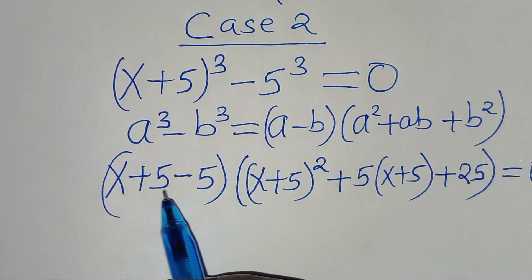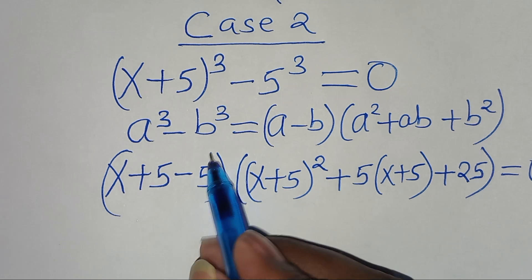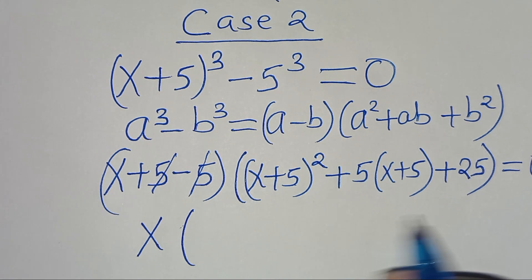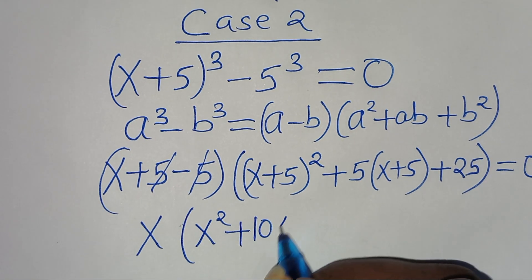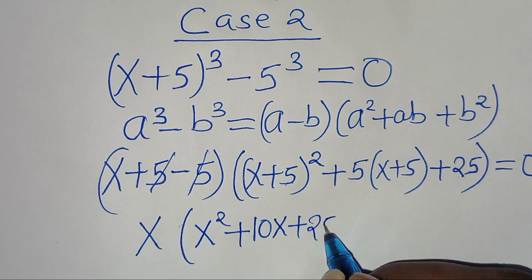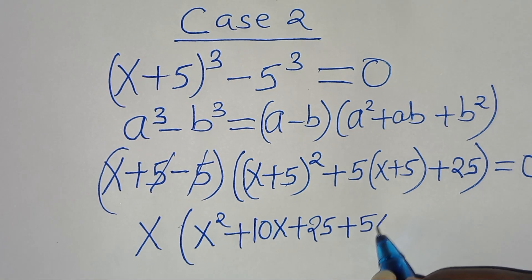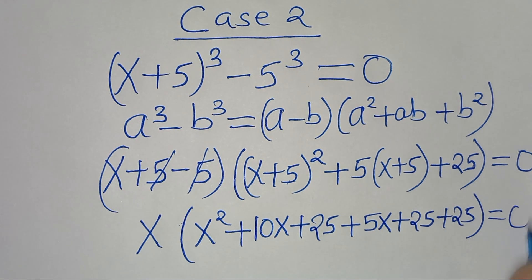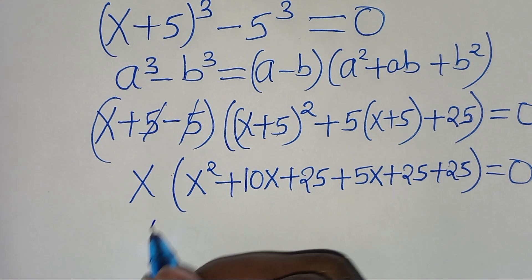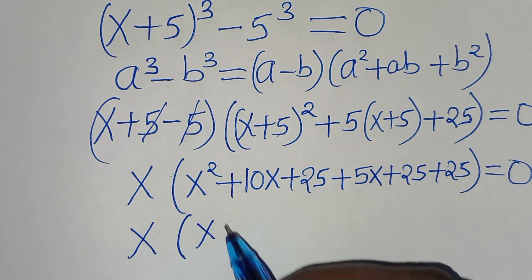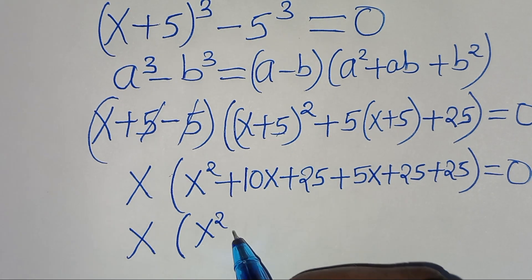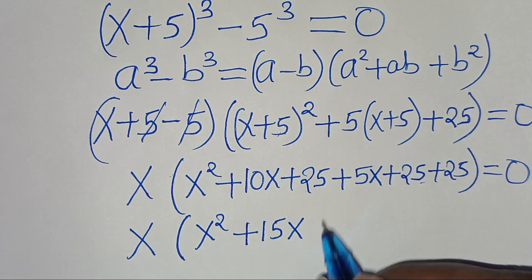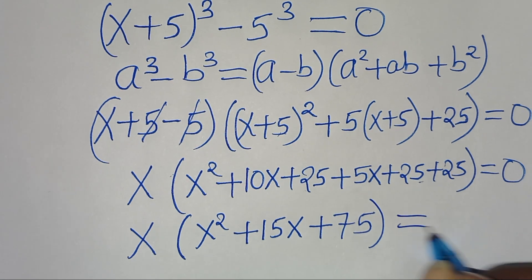Simplifying, x plus 5 minus 5 gives x. In the parenthesis: x plus 5 squared equals x squared plus 10x plus 25, then plus 5x plus 25 plus 25. So we have x times x squared plus 15x plus 75, equal to 0.